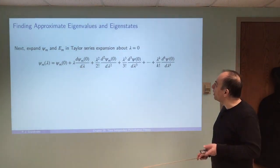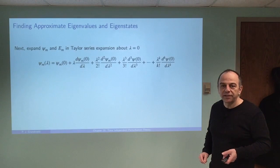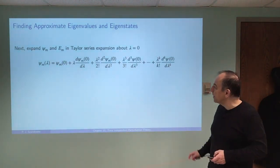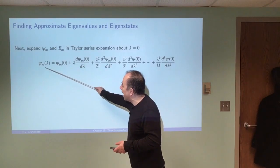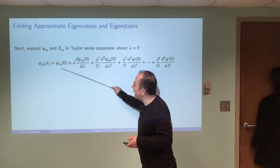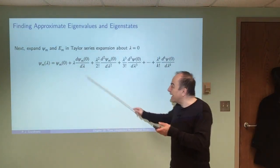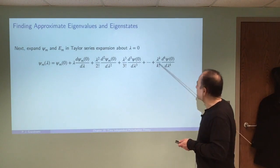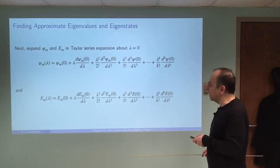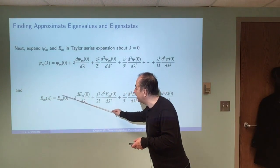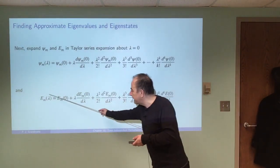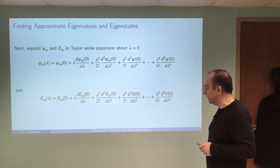We're going to do a Taylor series expansion for the wave function and the eigenvalues about the point lambda equals zero, where we already know the answer. A Taylor series expansion for the m-th eigenstate of the Hamiltonian is given by the m-th eigenstate of H0 plus correction terms. Similarly, we do a Taylor series expansion for the energy eigenvalue: the m-th energy of H0, which we know, plus corrections to be worked out to get our corrected energy for the full Hamiltonian.